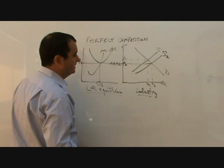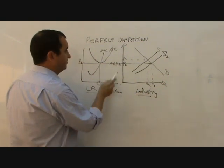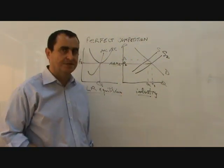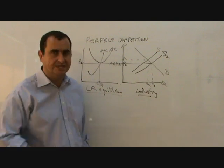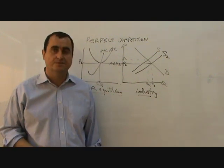I know that some people find that hard to follow. But the industry supply increased, but the price was driven down and each firm actually made less itself, even though the whole industry's supply increased. That's sometimes a question on the A-level. Okay, so I hope that helped you understand perfect competition.